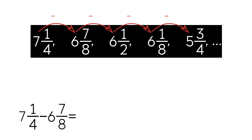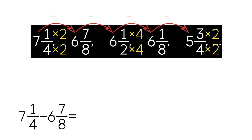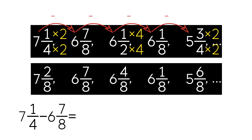To subtract, we're going to need a common denominator. We have the denominators 4, 8, and 2. The least common denominator between those numbers is 8. We multiply the denominator and the numerator of the first fraction by 2. We leave the second term the same because the denominator is already 8. For the third term, we multiply the denominator and the numerator by 4. We leave 6 and 1 eighth the same, and for the fifth term, we multiply the denominator and the numerator by 2. We actually only needed to do this for the two consecutive terms we're going to subtract, but we did it for all terms for educational purposes. Now we have a new sequence where all denominators are 8.